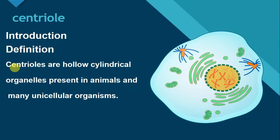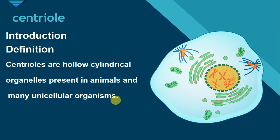Centrioles are the hollow cylindrical organelles present in animal cells and many unicellular organisms. Just have a look at this diagram of an animal cell — the centrioles are cylindrical in shape and hollow inside. They are present in animal cells and many unicellular organisms, but they are absent in plant cells.